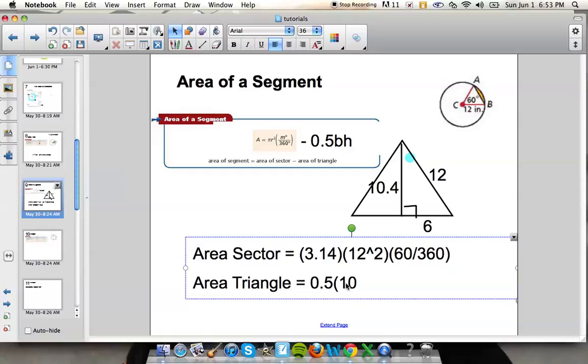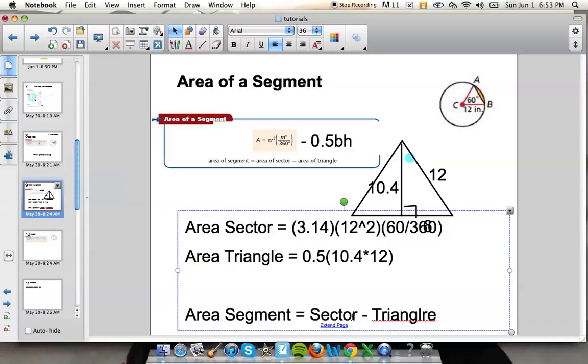So let's go ahead and finish this problem. Base times height, the base being 12. Make sure you do not use 6 because we want the whole triangle. Then what you're going to do is define the area of this segment. You're going to take this sector area and subtract it from the triangle area. Now if I were to find those I would be able to find the area of the segment.